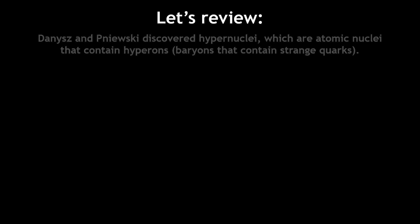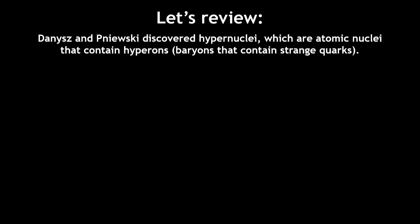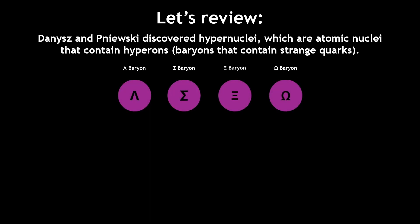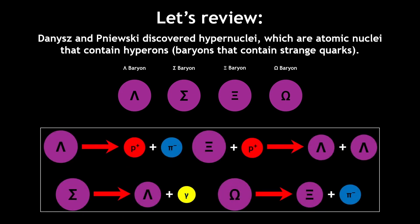So let's recap. Danyas and Pniewski discovered hypernuclei, which are atomic nuclei that contain hyperons, baryons that contain strange quarks. The four types of hyperons each have their own decay chains, which involve the loss of one strange quark to weak decay.